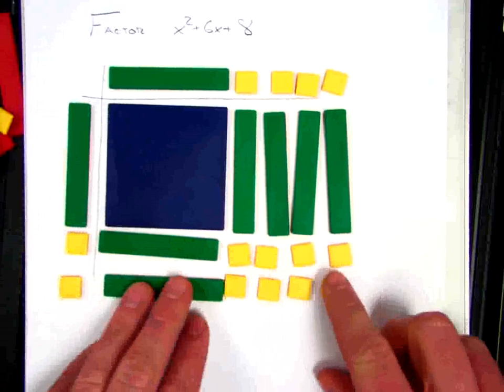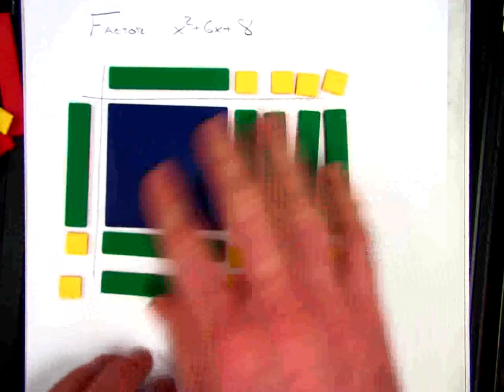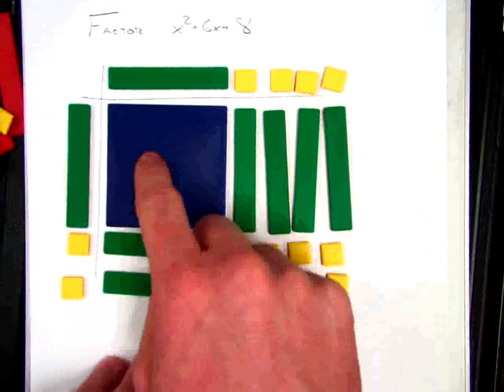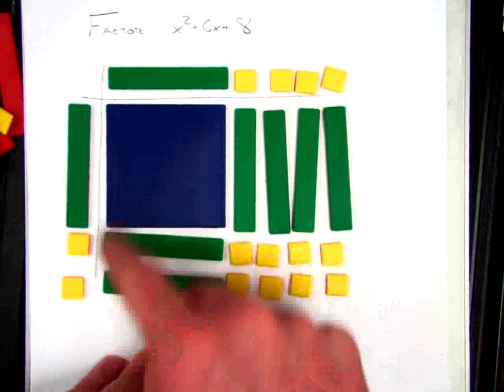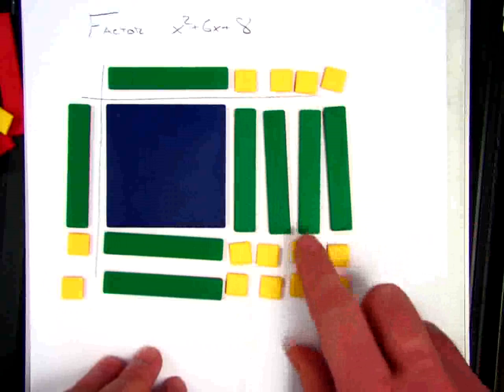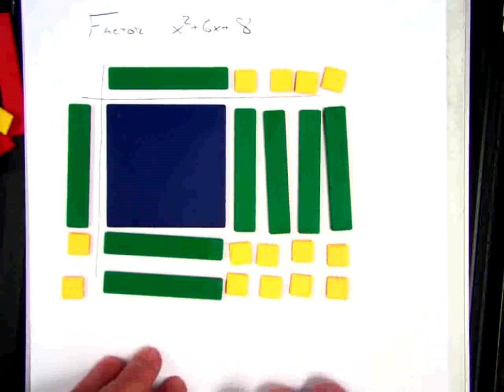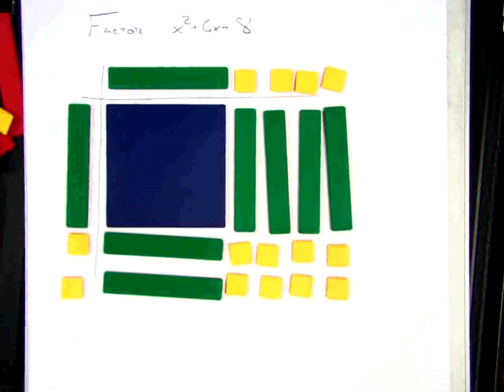And once again, I know this is the solution because once I arrange all of my product into a rectangle with my x squareds up in the top left and my units in the bottom right, it makes a perfect rectangle with no holes and everything adds up completely. I can check it by multiplying it back out.